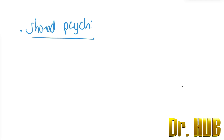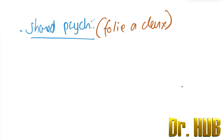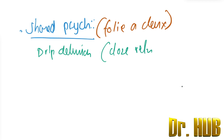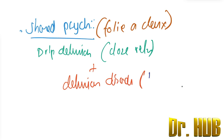Next is Shared Psychotic Disorder, also known as Folie à deux. There is a development of delusions in a person who is in a close relationship with someone who has a delusional disorder. This close relation can be a spouse, a child, or another close associate.